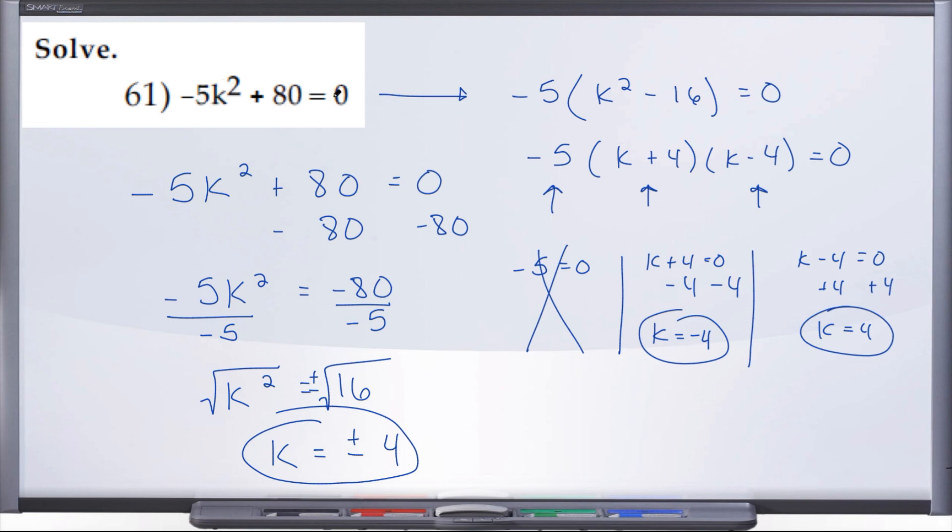Negative 80 plus 80 is 0. And then negative 4 squared is also positive 16, positive 16 times negative 5 again is negative 80, negative 80 plus 80 is 0. So both of these solutions, positive 4 and negative 4, are correct.